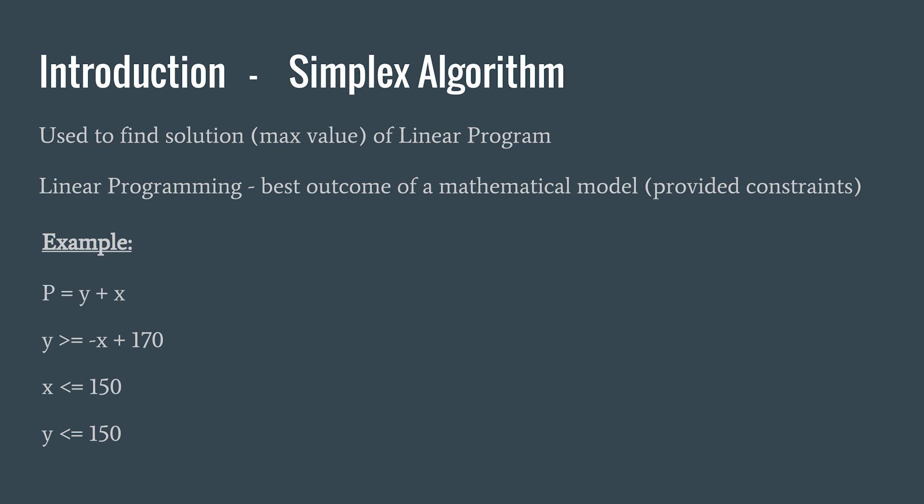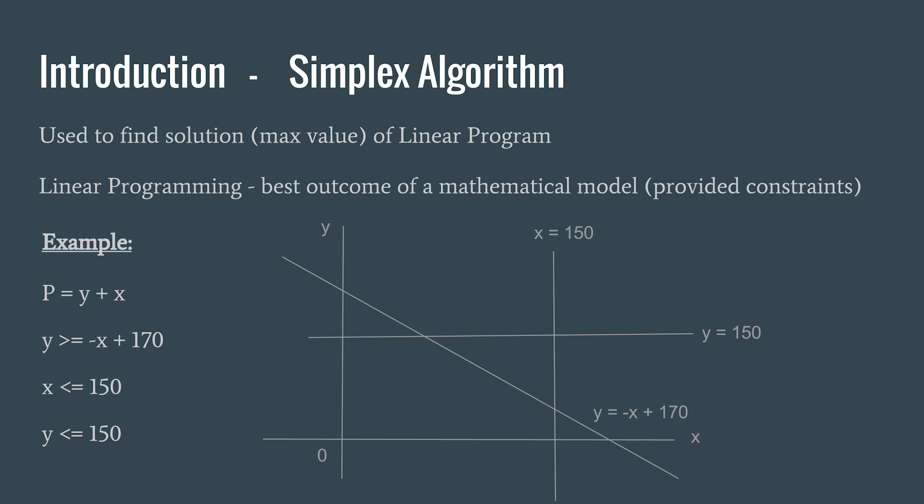For example, the objective function here is p equals y plus x, and we have the following constraints. We can easily draw a graph, and we can see that the triangle here encapsulates all feasible solutions. These feasible solutions are encapsulated by a convex hull, which is the minimum polygon encapsulating all feasible solutions. It's worth noting that the simplex algorithm only works with bounded linear programs.